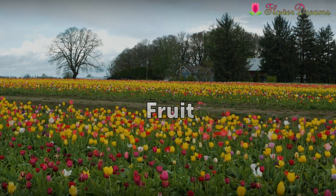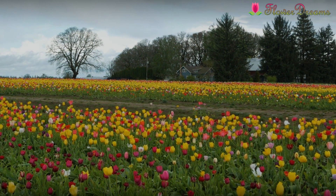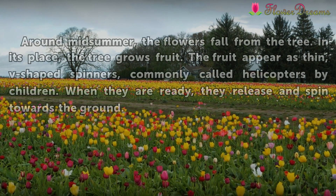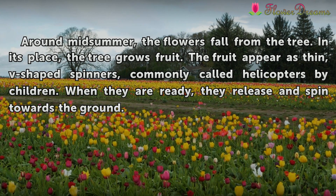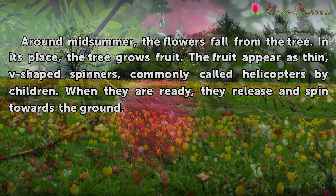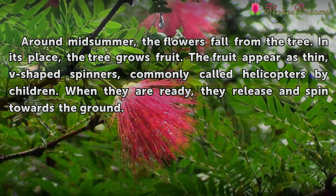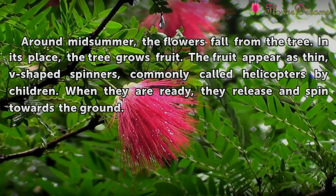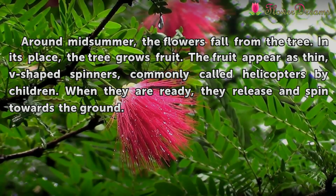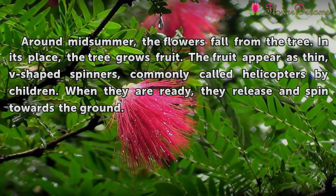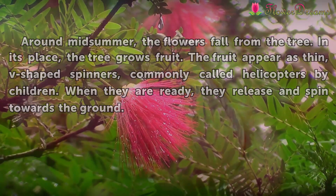Fruit. Around midsummer, the flowers fall from the tree. In their place, the tree grows fruit. The fruit appears as thin, V-shaped spinners, commonly called helicopters by children. When they are ready, they release and spin towards the ground.